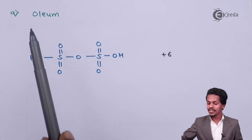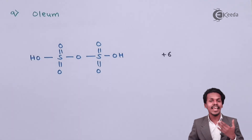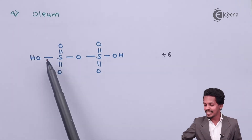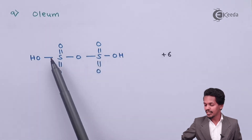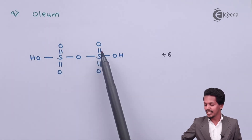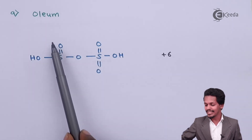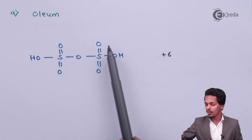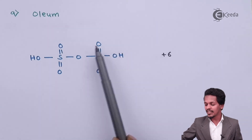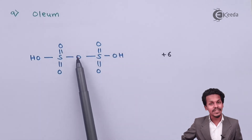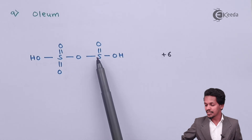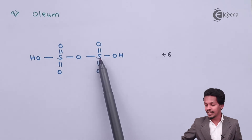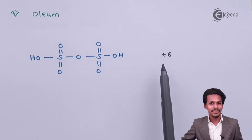Next is oleum, with the formula H₂S₂O₇. The structure consists of two similar sulfur-containing groups connected via an oxygen atom. The oxidation state of sulfur in oleum is plus 6.